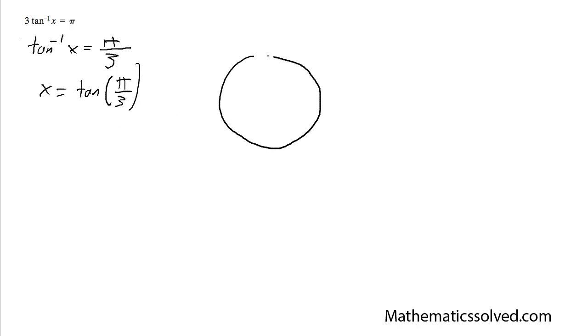Now if I get my unit circle here, another important thing is you can have two solutions, but the bounds of tangent are negative pi over 2 to pi over 2. This lets you know where you can place it.